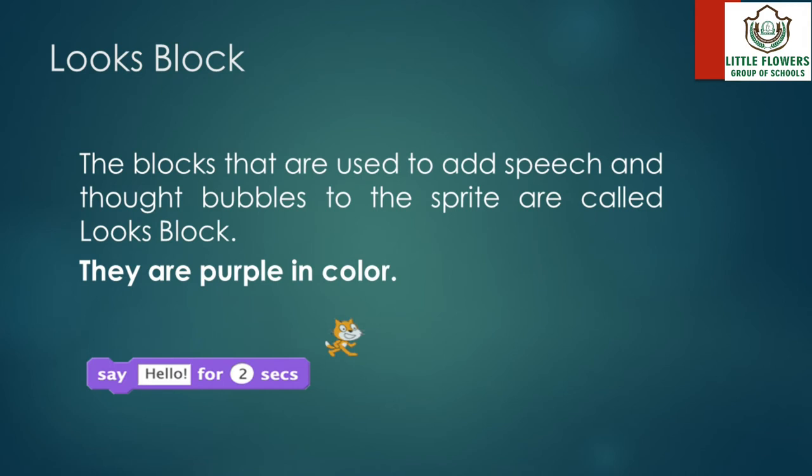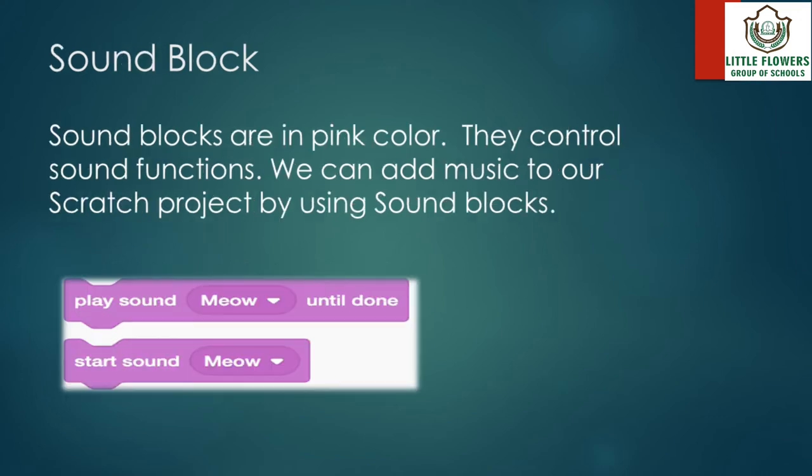Looks blocks: the blocks that are used to add speech and thought bubbles to the sprite are called looks blocks. They are purple in color. Sound blocks: sound blocks are pink in color. They control sound functions. We can add music to our Scratch project by using sound blocks.